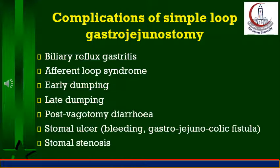Dumping syndrome is caused by rapid emptying of nutrients into the small bowel. It affects most patients but is a significant problem in only a few. The first type is early dumping syndrome, which is more common, occurring within 20 to 30 minutes following a meal, and is more common after partial gastrectomy with Billroth 2 reconstruction. It results from rapid movement of a hypertonic food bolus into the small intestine, causing rapid fluid shifts into the bowel, distension, and autonomic response with release of hormonal agents, resulting in GIT symptoms such as nausea, bloating, abdominal cramps, and explosive diarrhea.